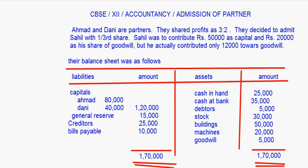Today I am going to take up a complete question on admission of partner. Ahmed and Dani are partners who share profits in the ratio of 3:2. They decided to admit Sahil with one-third share. Sahil was to contribute rupees 50,000 as his capital and rupees 20,000 as his share of goodwill, but he actually contributed only rupees 12,000 towards goodwill.